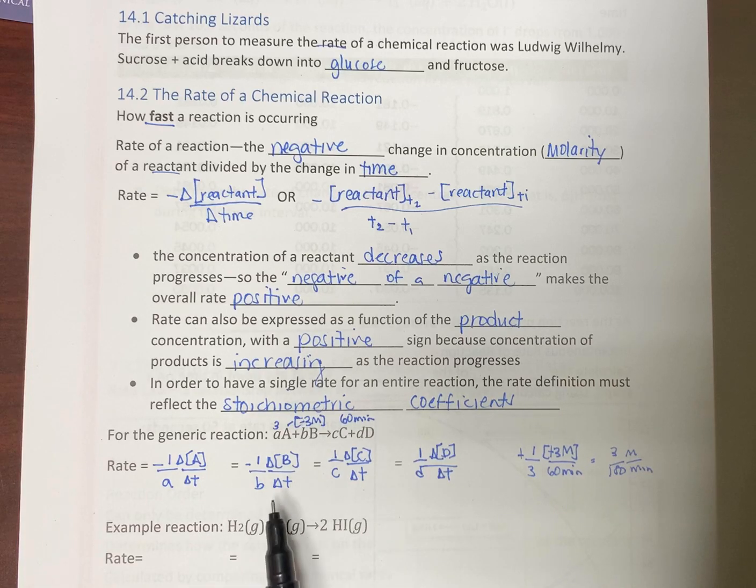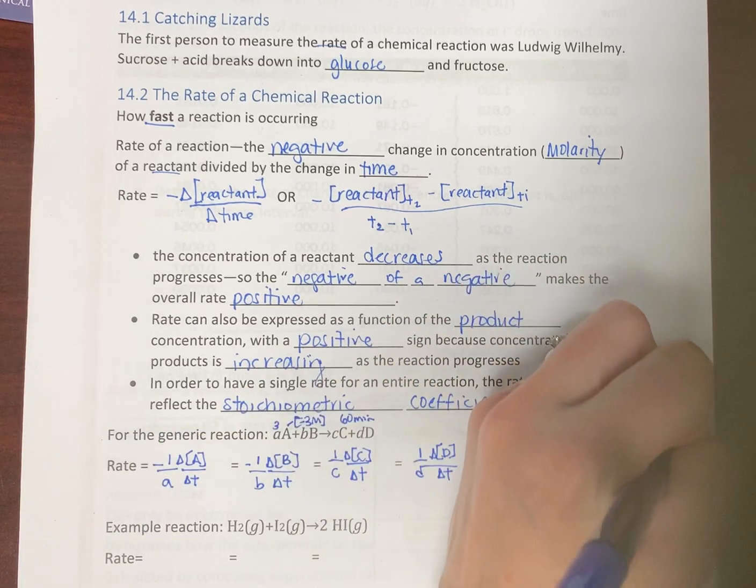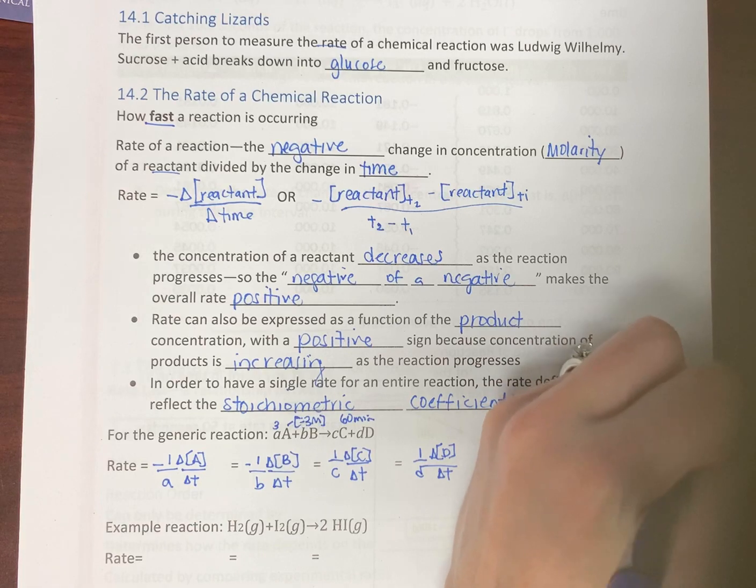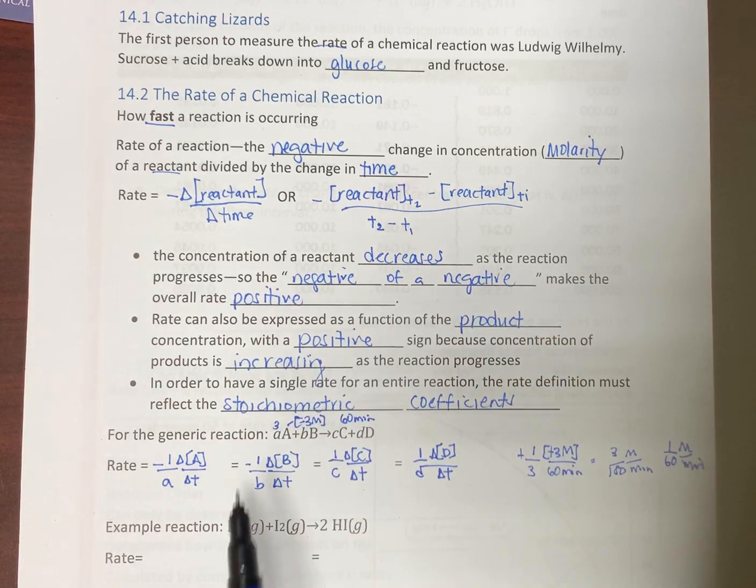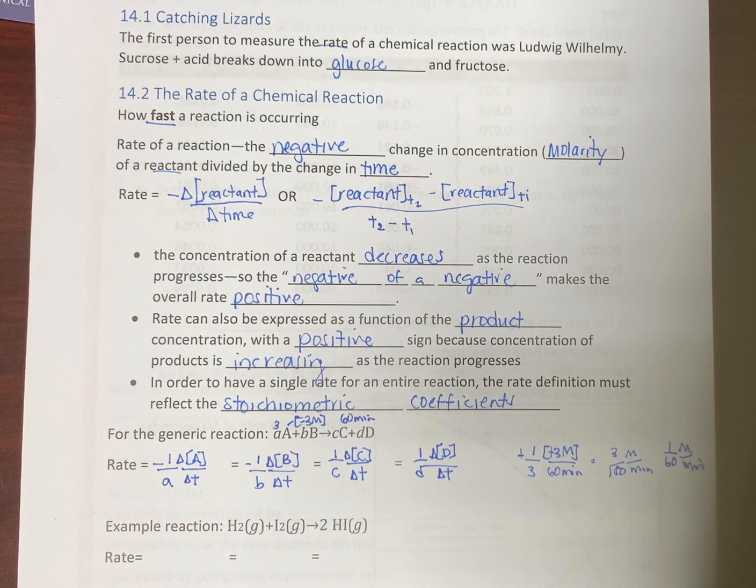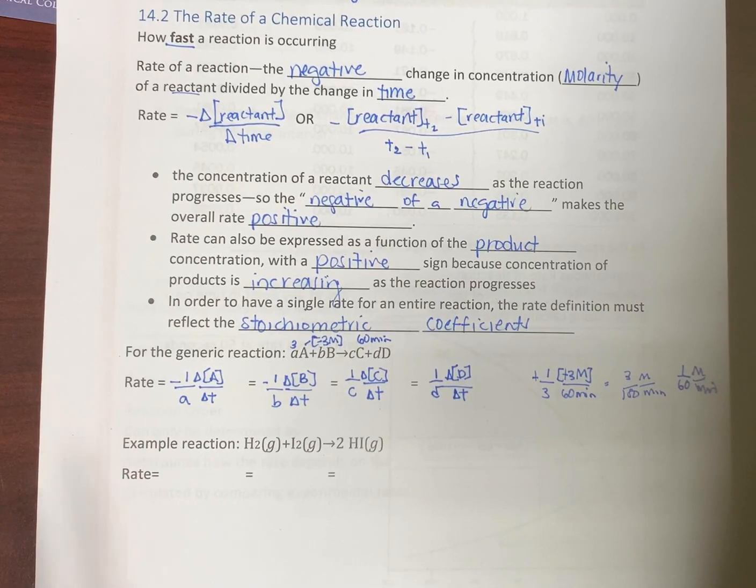You should get the same 1 over 60 molarity per minute for each of these, depending on what's given. You don't have to do it four times. Use the information. Pick one of them that you know. Let's try this.